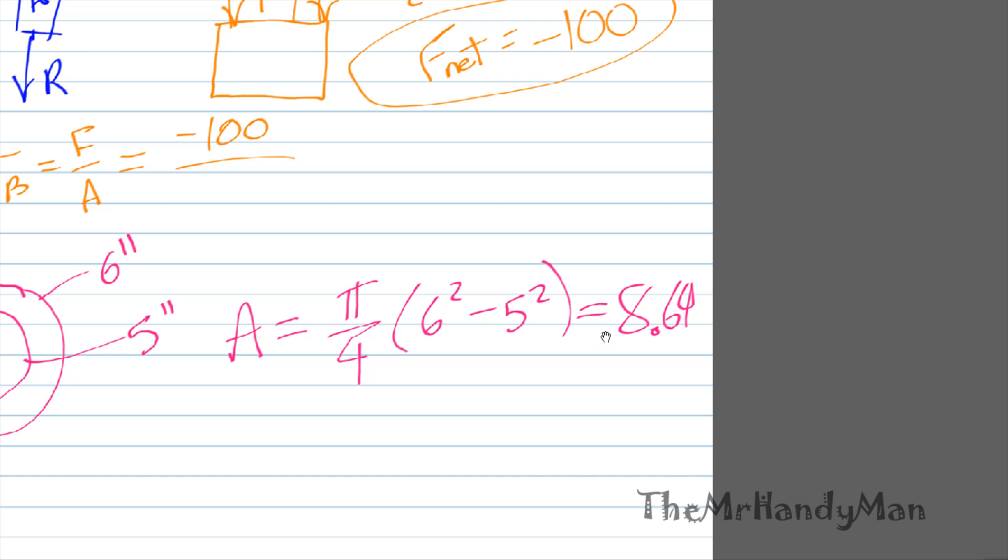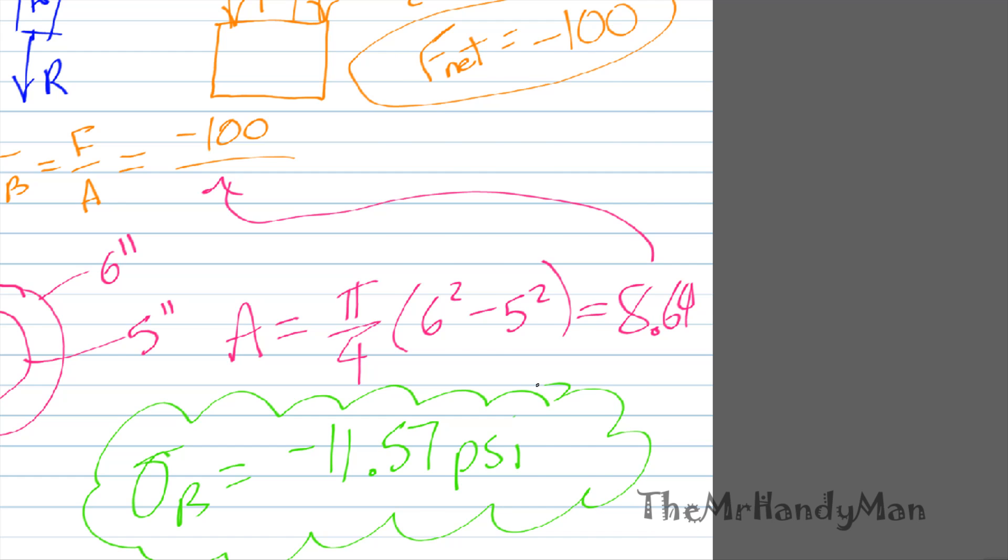8.64. So if I plug that beast in to the equation above, right here, what you end up getting is some stress at B of negative 11.57 psi. Realize that the negative means that we have a net compression in this cross section.